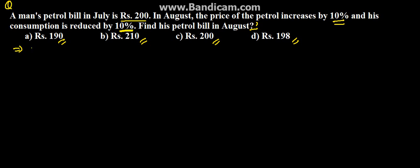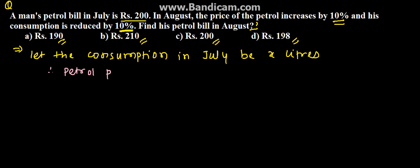To begin with the solution, let the consumption in July be x liters. Therefore, we can find the petrol price. The petrol price in July will be rupees 200 upon x.